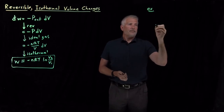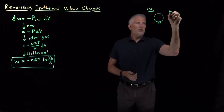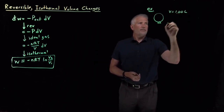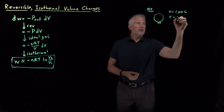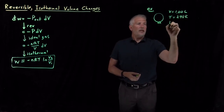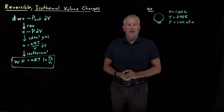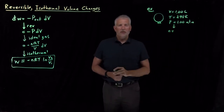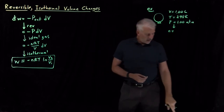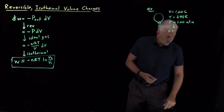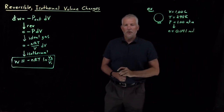Instead of pistons, let's talk about a balloon. I have a balloon with a volume of one liter, a temperature of 298 Kelvin, and an initial pressure of one atmosphere. Using the ideal gas law with N equals PV over RT, I find there are 0.041 moles of gas inside this balloon.